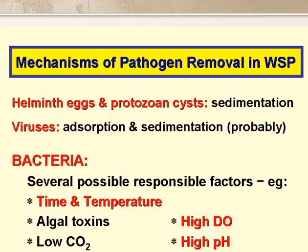Now we come to the actual mechanisms of excreted pathogen removal in ponds. It's pretty clear that helminth eggs are simply removed by sedimentation, and the same is true for protozoan cysts — although because these are much smaller than helminth eggs, their sedimentation rate, and hence their removal, is much lower. With viruses we are less certain, because there are very few data on viral removal in ponds. But it seems that they are mostly removed by adsorption onto settleable solids, and thus by sedimentation when these solids settle. Viruses have quite a high surface charge, so at least this is a reasonable hypothesis.